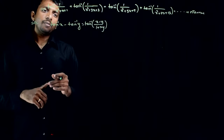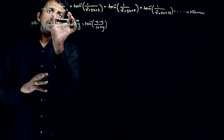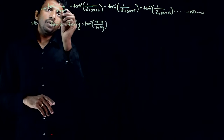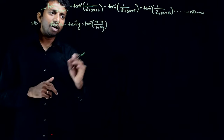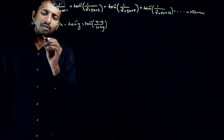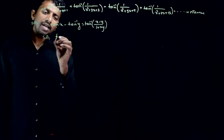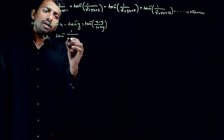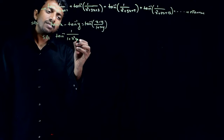If you convert each term in two parts, the numerator must be of the form something minus something, and the denominator must be of the form 1 plus something times something. Let us try to write the first term: tan inverse of 1 by (1 plus x squared plus x).